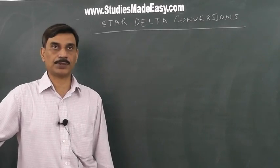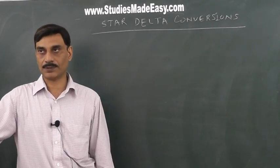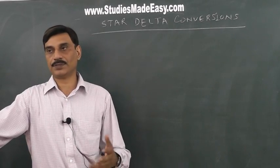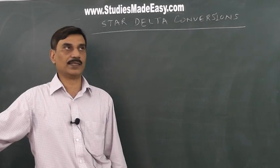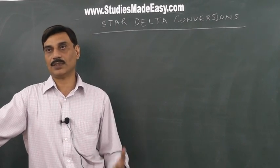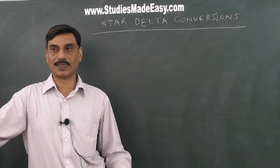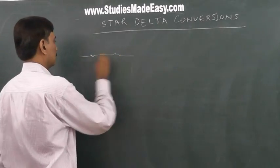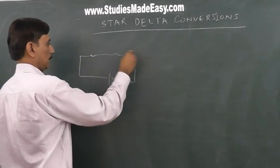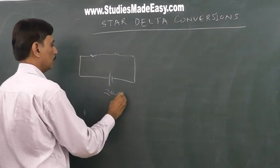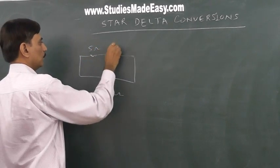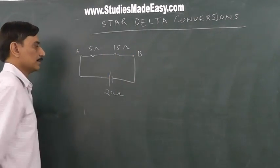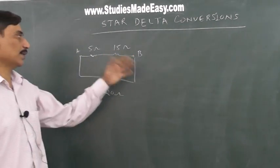I would like to do star-delta conversions or star-delta transformations for basic electrical circuits. The first important thing is you should be able to find out how you define equivalent resistance. Suppose this is 20 ohm, this is 5 ohm, this is 15 ohm — these are between points A and B. Someone asks: what is the equivalent resistance?